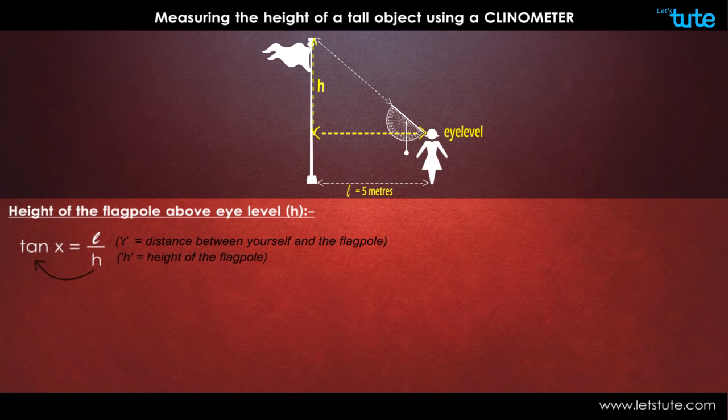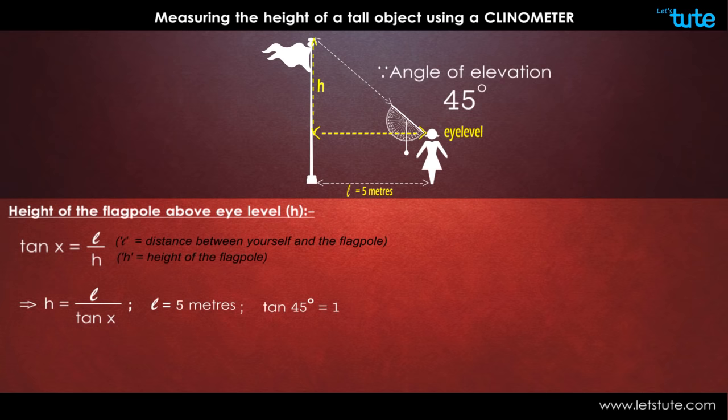By taking h on the left side and tan x on the right side, we get h equals l upon tan x. We already know that l equals 5 meters and tan of 45 is 1. Therefore, by substituting these values, we get h equals 5 meters upon 1, which is 5 meters.